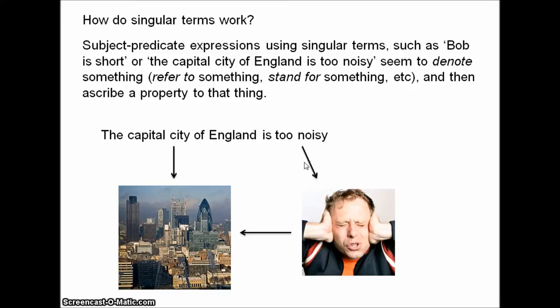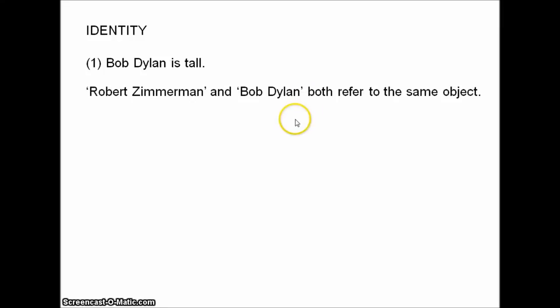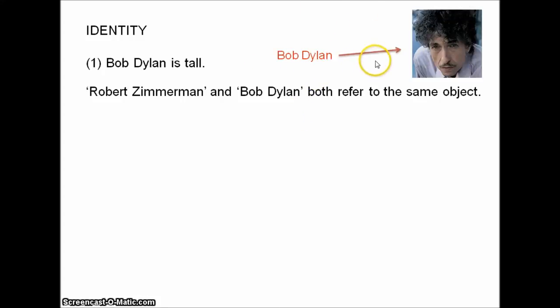But this view of singular terms leads to four puzzles — four quite big puzzles. Firstly, there's a puzzle about identity. Consider this proposition: Bob Dylan is tall. Now, Bob Dylan is also known by the name Robert Zimmerman — that was Bob Dylan's birth name. So the names Bob Dylan and Robert Zimmerman both refer to precisely the same object. We have Bob Dylan referring to this guy, and Robert Zimmerman referring to this guy.